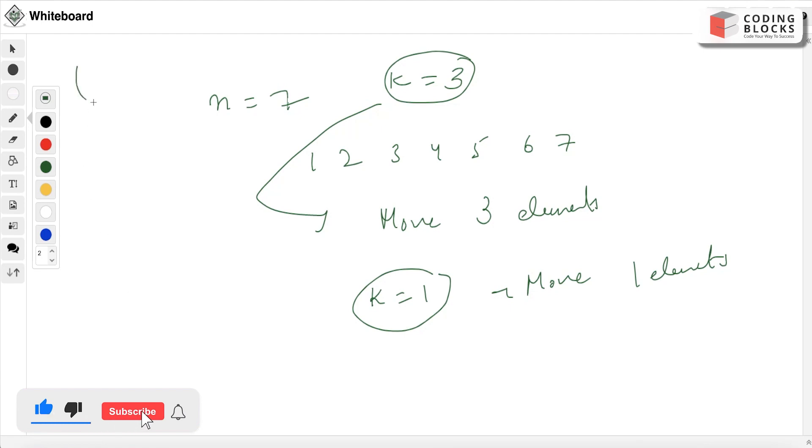So what if we deduce such an algorithm: in the first step we reverse everything, reverse the whole array. In the second step, we reverse zero to K minus one elements.